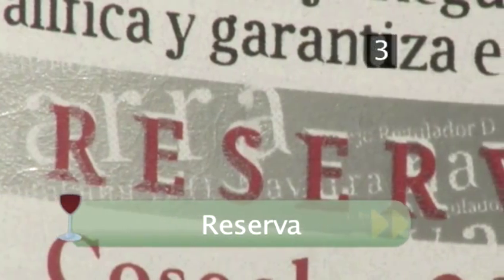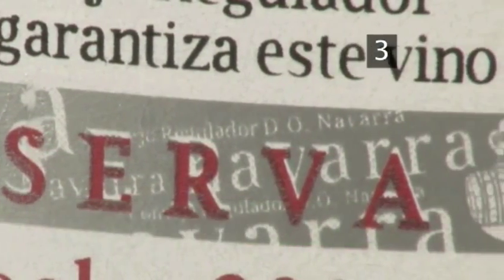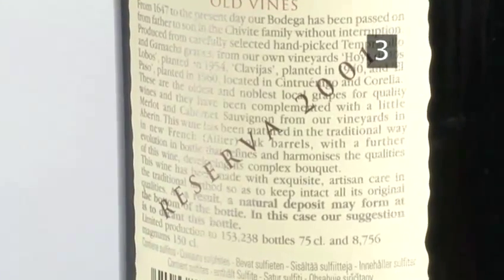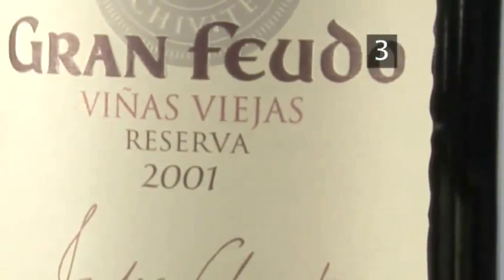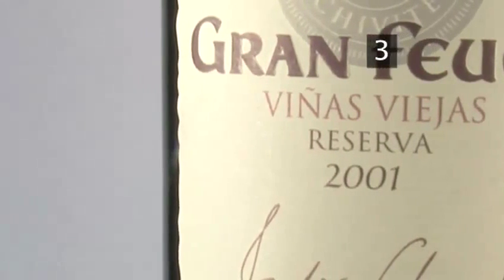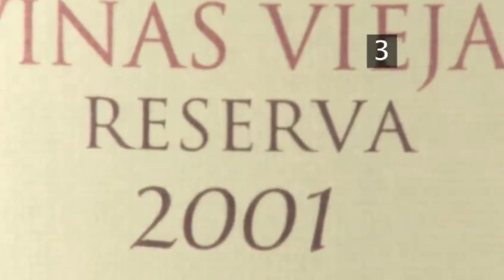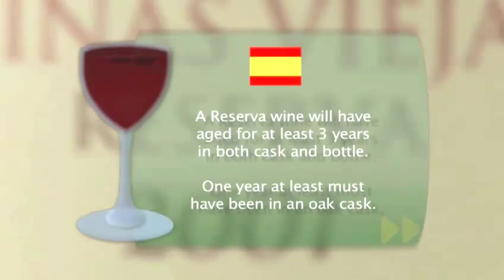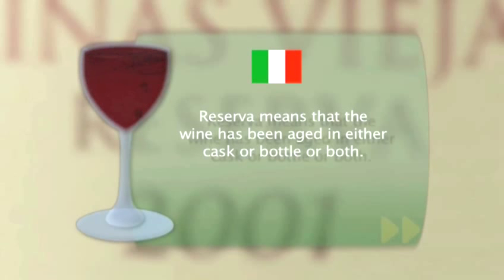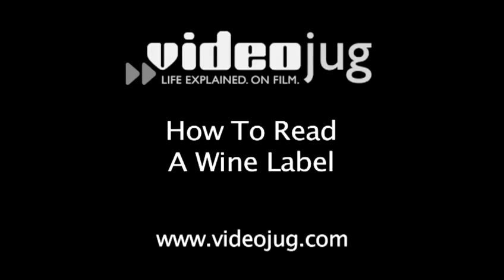Step 3. Reserva. Reserva is a term that appears on many wines, particularly on wines from the New World. Most of the time, when on New World wines, it's a marketing ploy and means nothing. But in the Old World, on Spanish wines and on Italian wines, it means that the wine has been aged. In Spain, a Reserva wine will have been aged for at least three years in both cask and bottle, with at least one year in an oak cask. In Italy, Reserva just means that the wine has been aged in either cask or bottle, or both. For information on how to read wine labels from other parts of the world, watch the VideoJog film How to Read a Wine Label.